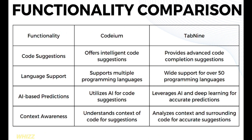As you can see on this table, in terms of code suggestions functionality, Codium offers intelligent code suggestions. On the other hand, Tab9 provides advanced code completion suggestions. In terms of language support, Codium supports multiple programming languages, while Tab9 provides support for over 50 programming languages. And in terms of AI-based prediction functionality, Codium utilizes AI for code suggestions, while Tab9 leverages AI and deep learning for accurate predictions.